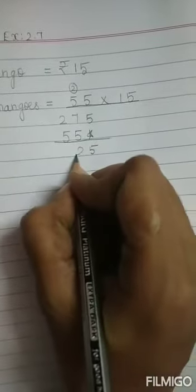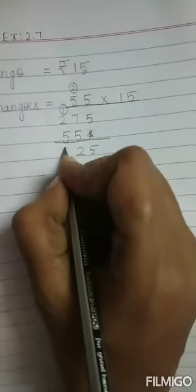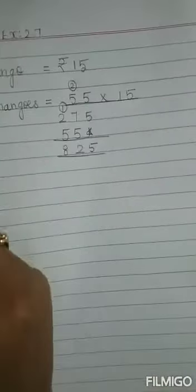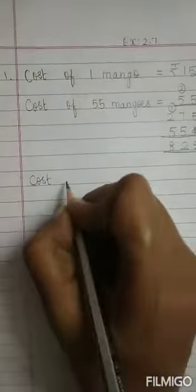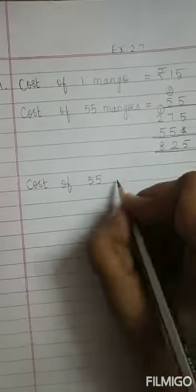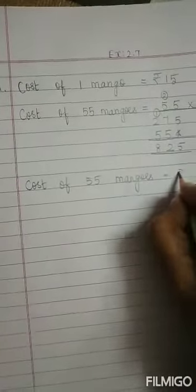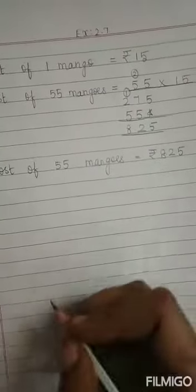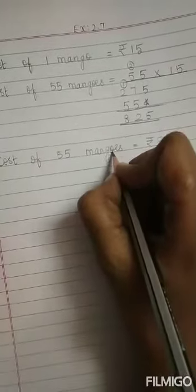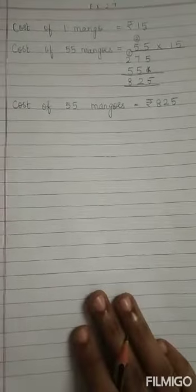Now you add up 5. 7 plus 5 will be 12. 1 carry over. 1 plus 2, 3. 3 plus 5, 8. What is the cost of 55 mangoes? Cost of 55 mangoes is equal to rupees 825. This is your first answer. Shall we see the second sum, children?